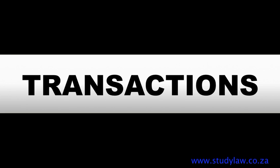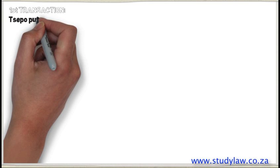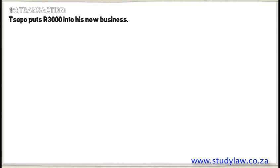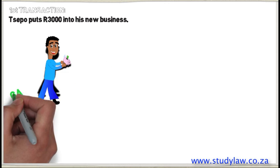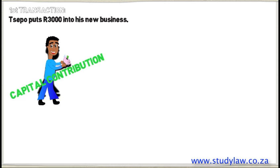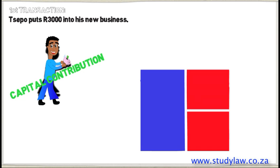Let's look at the transactions in this scenario. The first transaction is when Seppo puts R3,000 into his new business. When an owner puts money into a business, we call this a capital contribution. We have already learned that this is a type of equity account. If you do not know this, go back to Chapter 1 and revise the classification of accounts. Going back to our analogy of a business as a square,